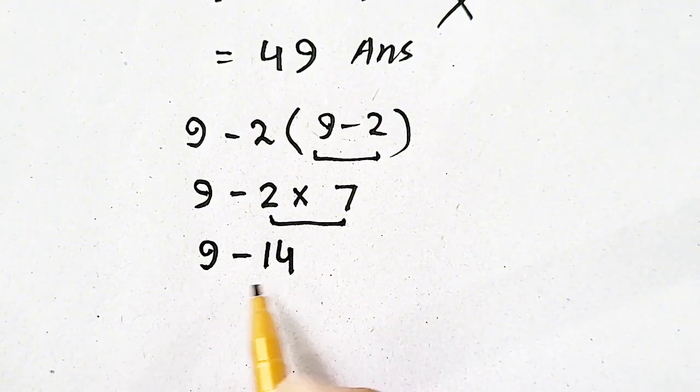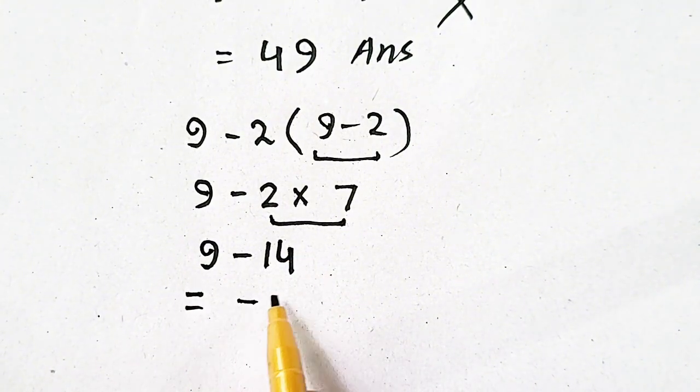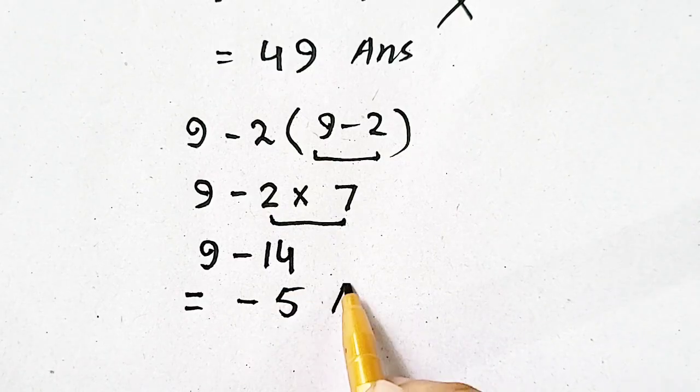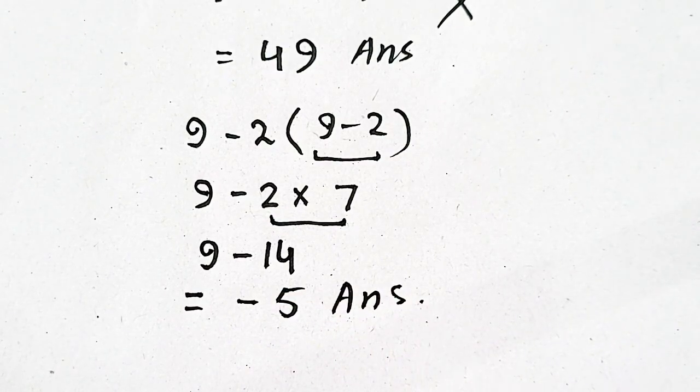So, 9 minus 14 will be equal to minus 5. Which will be your correct answer.